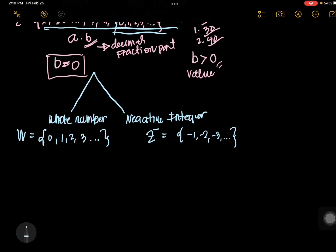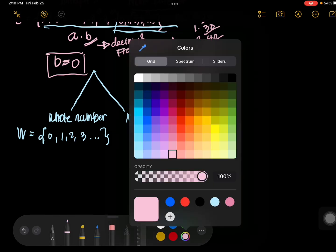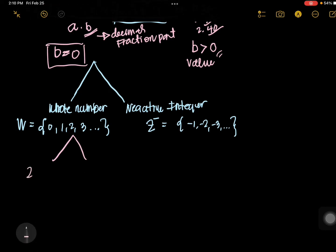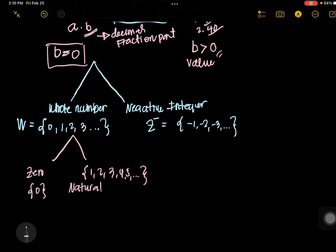Whole numbers are subdivided into 2 again. You have 0 — that is one element — and then 1, 2, 3, 4, 5, and so on, which we call natural numbers. These are also called counting numbers and positive integers.